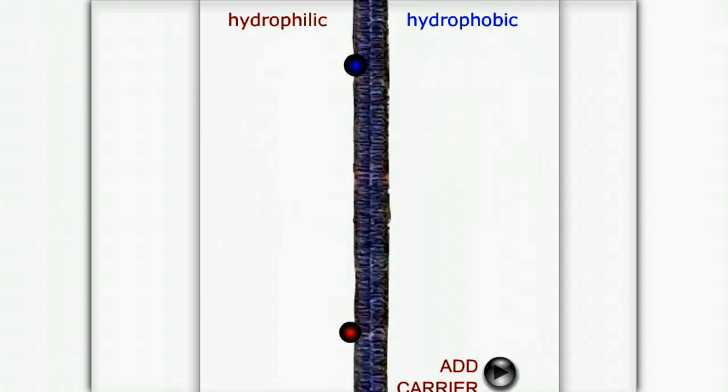It is impermeable to hydrophilic molecules, depicted here as red. There are a number of ways across the membrane. Most involve proteins that are specific for specific cargoes.